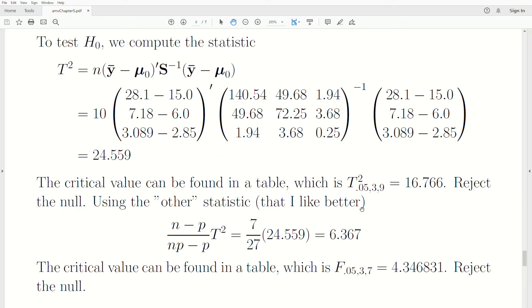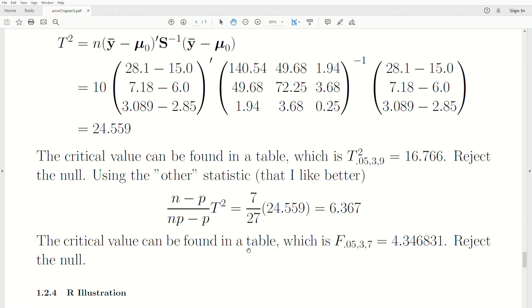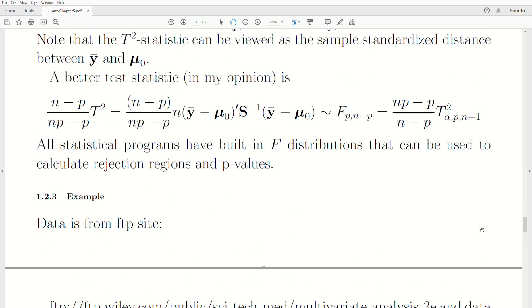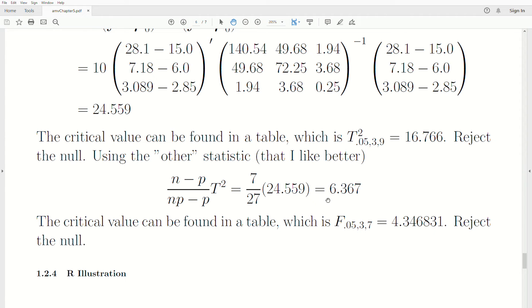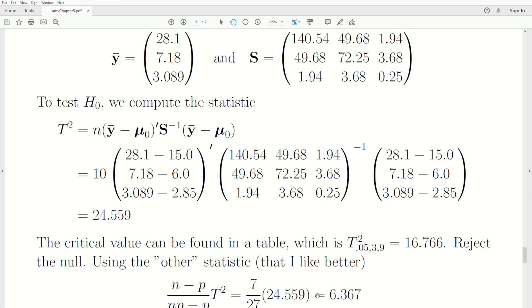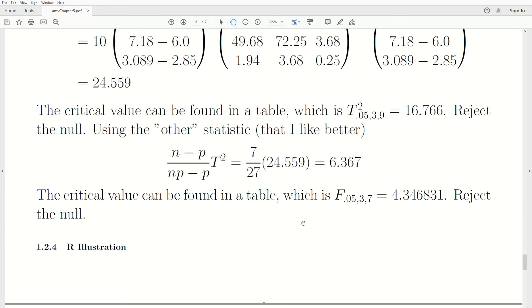Using the other statistic, of course, that I like better, is you take N minus P, which is going to be 10 minus 3, and this is going to be 10 times 3, 30 minus 3, 27 times T squared, which is calculated up there, which is 6.364. The critical value found in the table, or any other statistical computer software, F of 0.05, so we're using an alpha value of 0.05, numerator degrees of freedom is P, and the denominator degrees of freedom is N minus P. And that is 4.3468321. Notice the test statistic is bigger than that critical value, so we reject the null hypothesis. Doing it the second way, which I like better, or the first way, the results are always 100% the same.